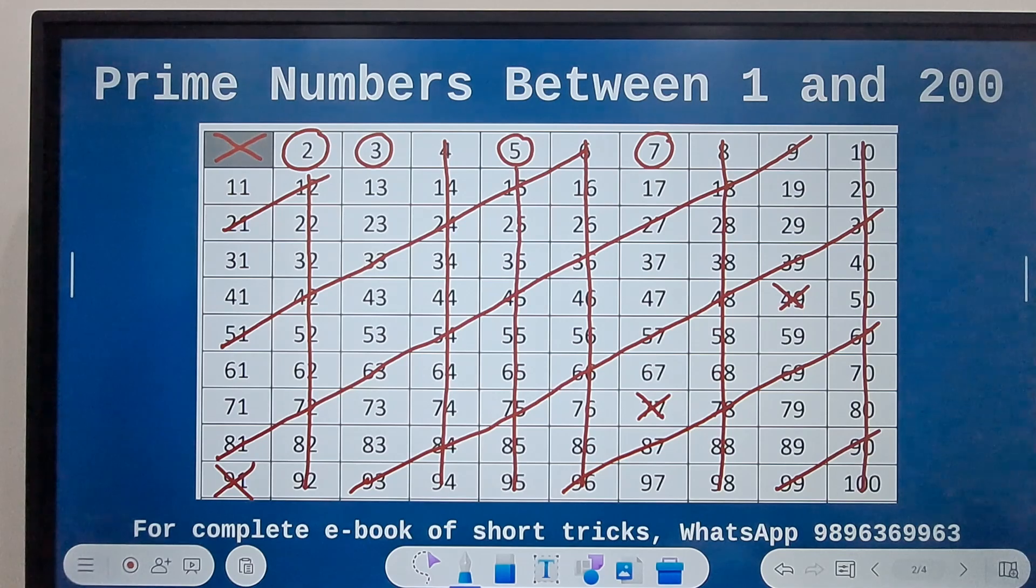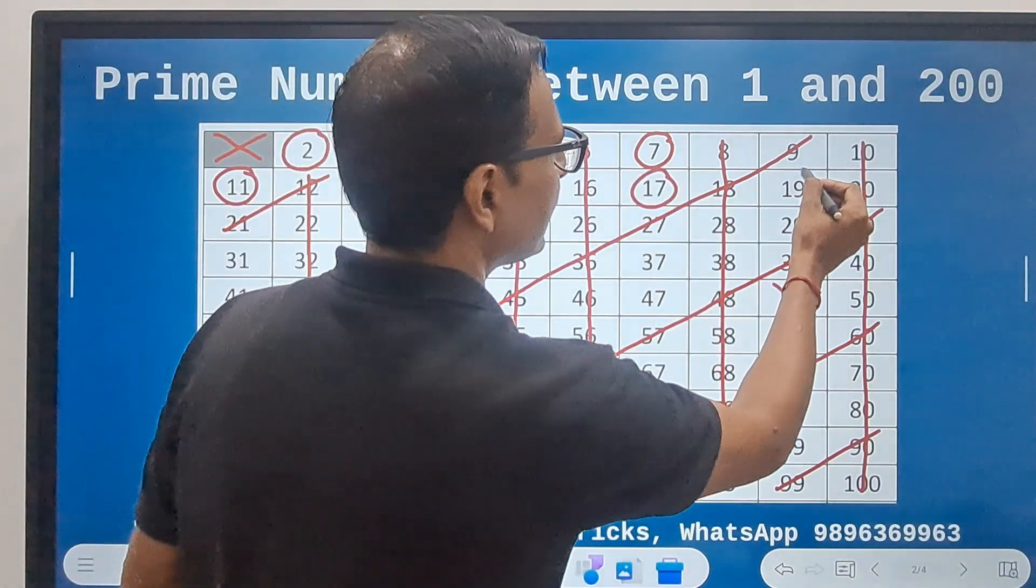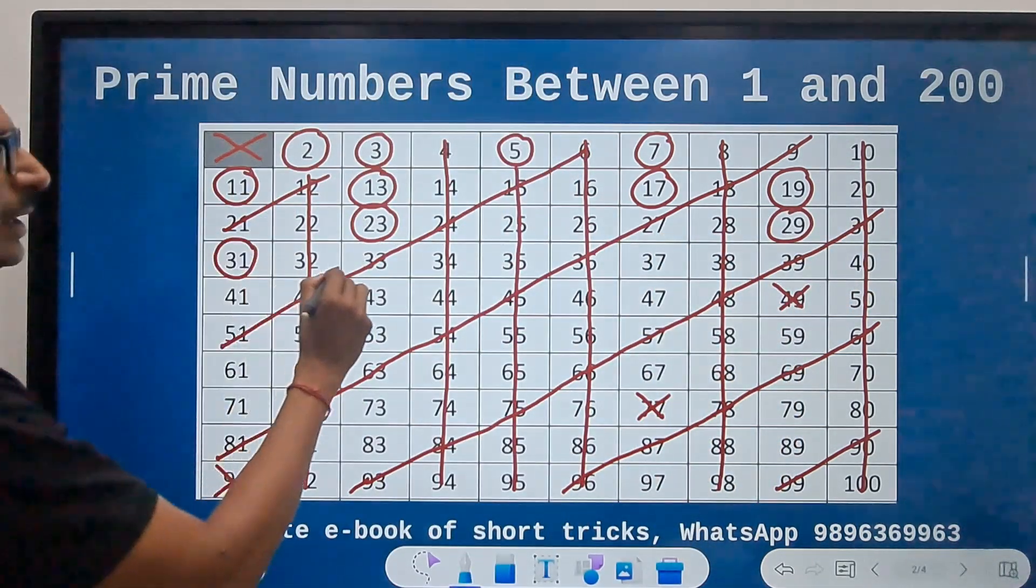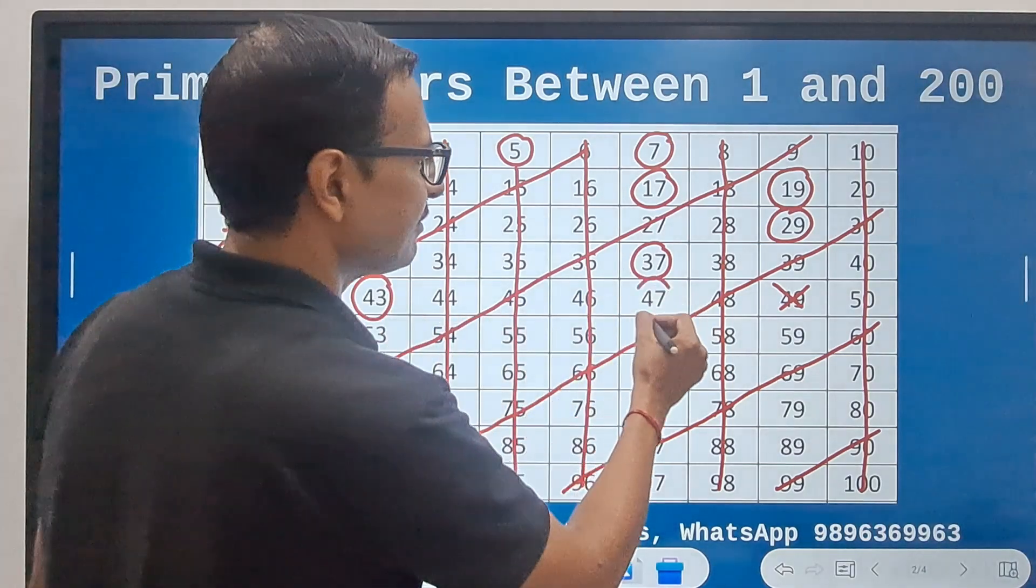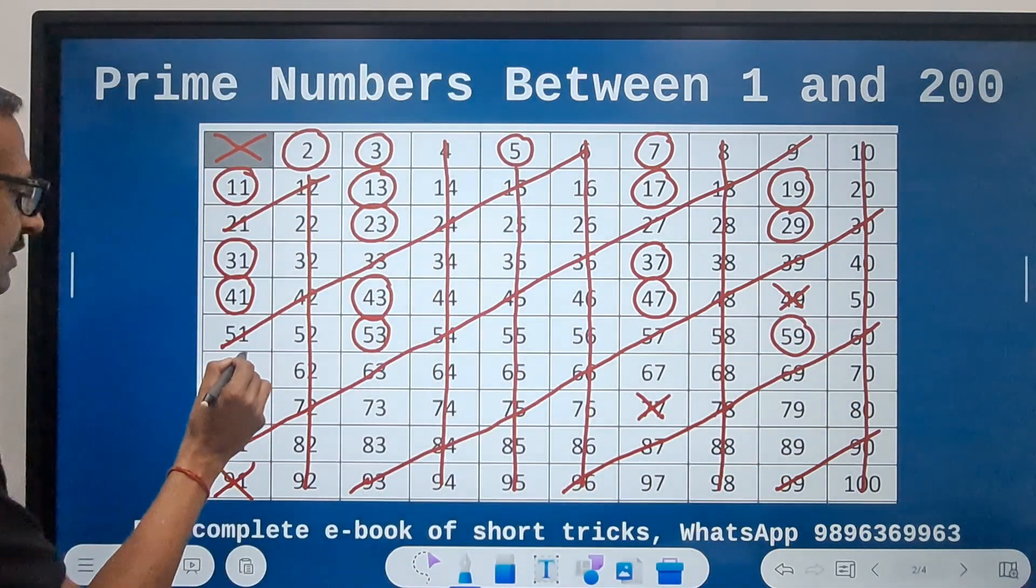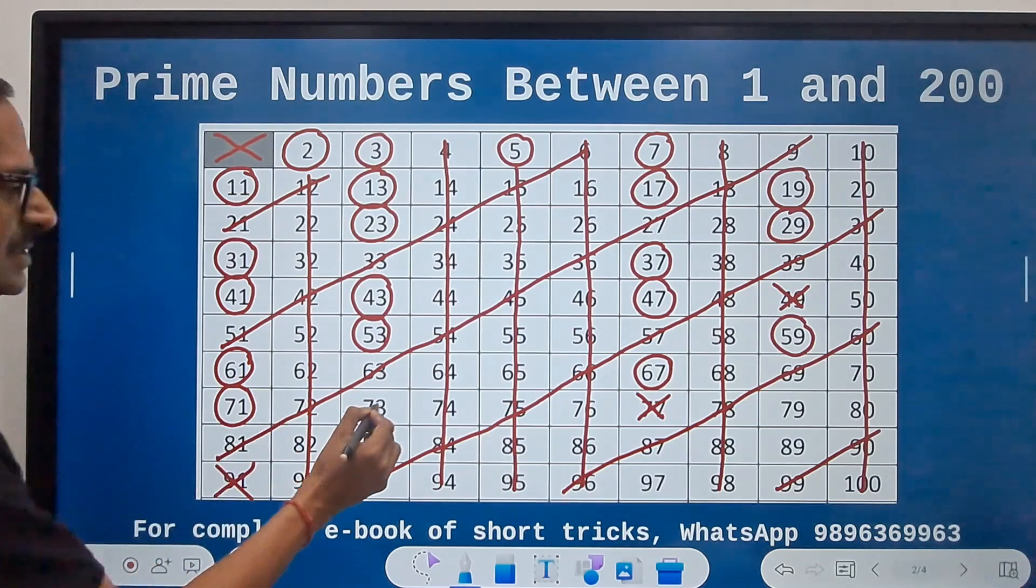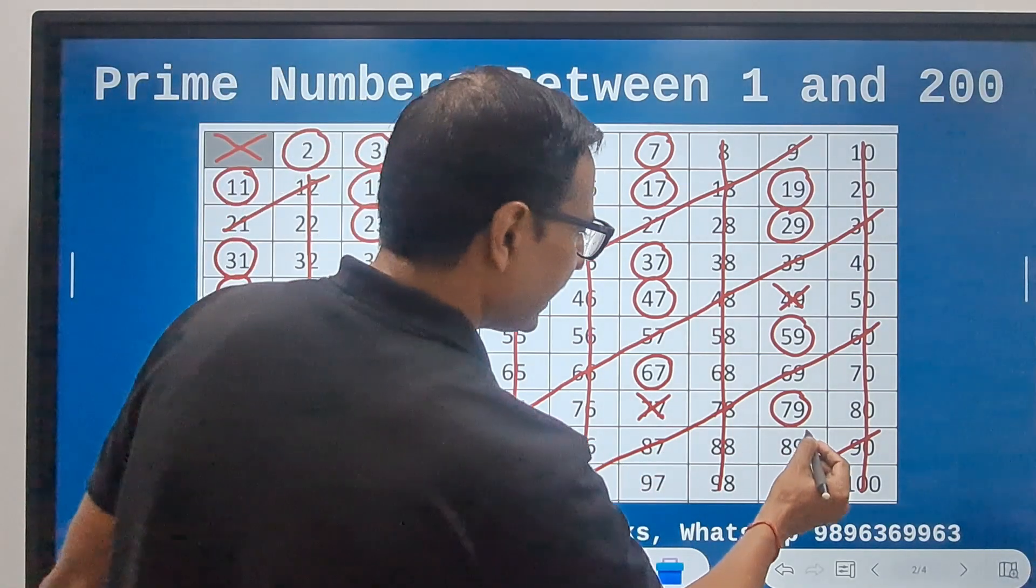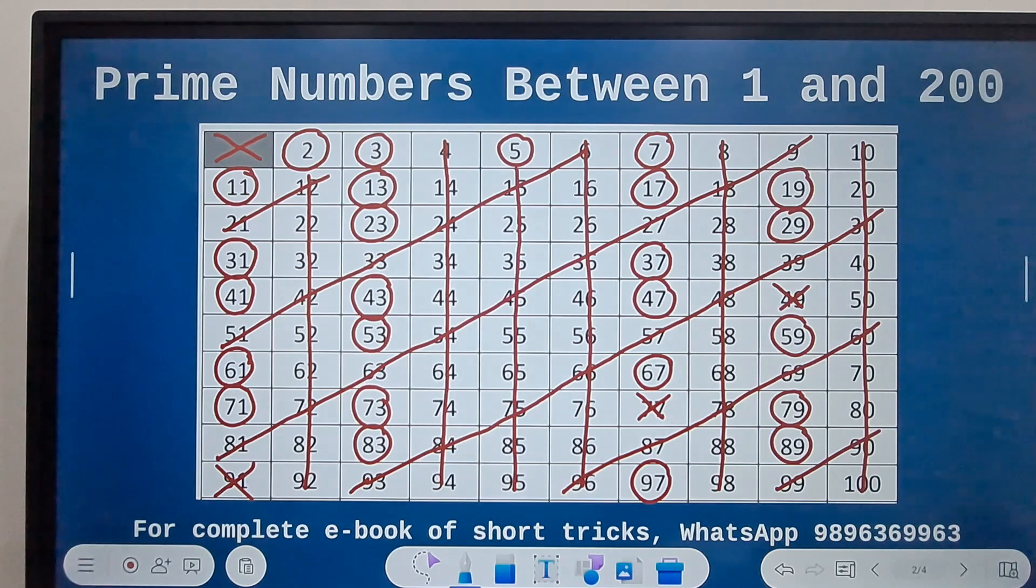So you can see the numbers which are left here are all prime now. So 11 is a prime number, 13 is a prime number, 17 is a prime number, 19 is a prime number, 23, and then 29, then 31, and then 37, then we have 41, 43, 47, and after that we have 53, then 59, 61, after this 67 and 71, 73, 79, and then 83, 89.